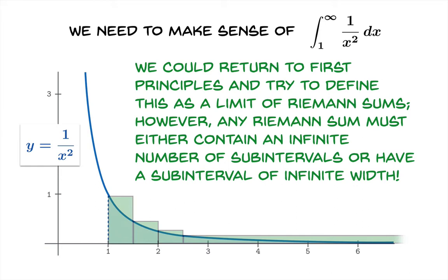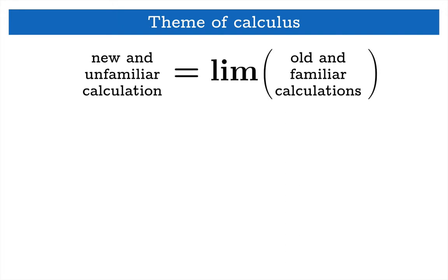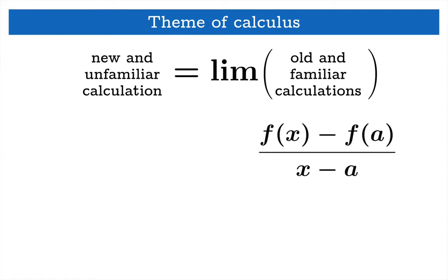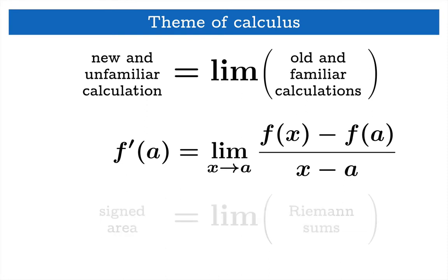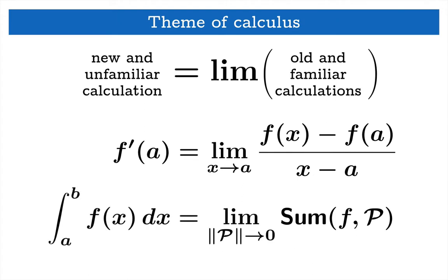Let's remember a theme of calculus: a new and unfamiliar calculation can often be constructed out of old and familiar calculations by taking a limiting value. For example, a tangent slope can be obtained by looking at secant slopes and then looking at the limiting value — the average rate of change of f on an interval from a to x, and then the limit as x approaches a gives the tangent slope at a by definition. Similarly, signed area under a graph is obtained from Riemann sums — sums of areas of rectangles — and then the appropriate limiting value, which gives the definite integral of f on the interval from a to b.